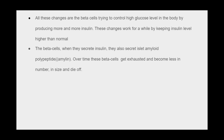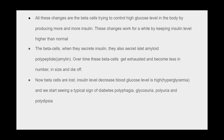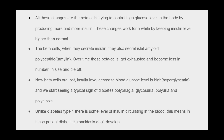When beta cells secrete insulin, they also secrete islet amyloid polypeptide (amylin). Over time, the beta cells get exhausted, decrease in number and size, and die off. As beta cells are lost and insulin levels decrease, blood glucose rises (hyperglycemia) and the typical signs of diabetes appear: polyphagia, glycosuria, polyuria, and polydipsia. Unlike type 1 diabetes, some insulin still circulates in the blood, meaning diabetic ketoacidosis does not typically develop in type 2 patients.